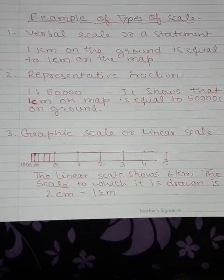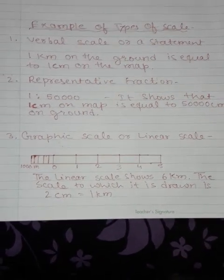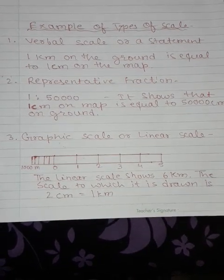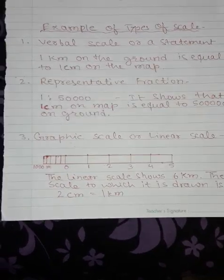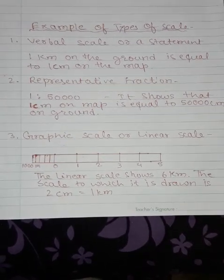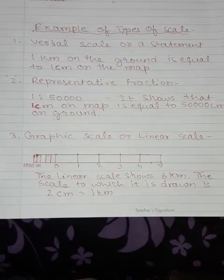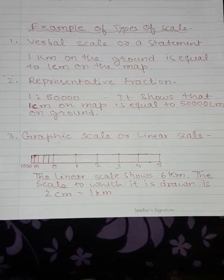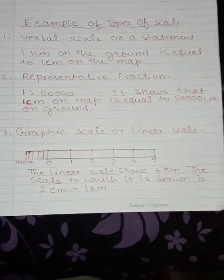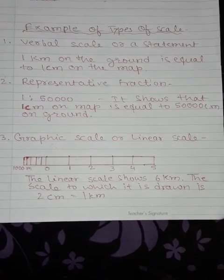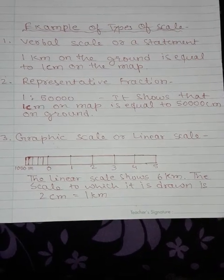You can see on this page the examples of all three types of scale. Verbal scale is written in words: one kilometer on the ground is equal to one centimeter on the map. The representative fraction shows the ratio 1:50,000, meaning one centimeter on the map equals 50,000 centimeters on the ground. The graphic or linear scale is shown in a line representing six kilometers, where the scale is drawn as two centimeters to one kilometer.